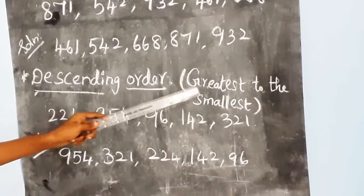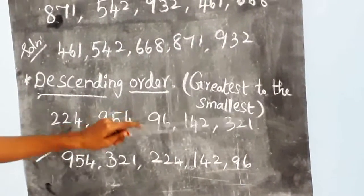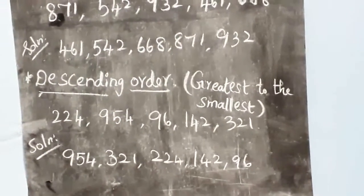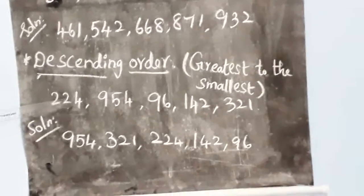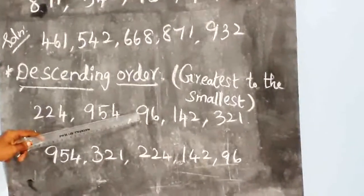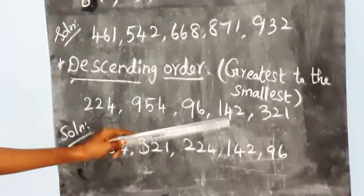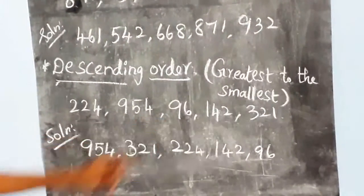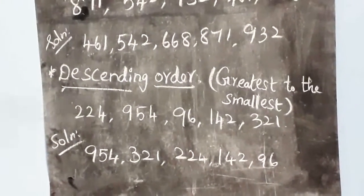Descending order means greatest to the smallest. Look at the example: 224, 954, 96, 142, 321. Descending means greatest to the smallest.